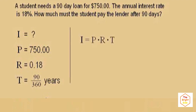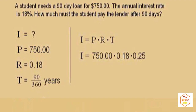Here's our formula: I equals our principal of 750, times our interest rate of 0.18, times our time in years. What's 90 divided by 360? That's 0.25. So now we get our product: $33.75.